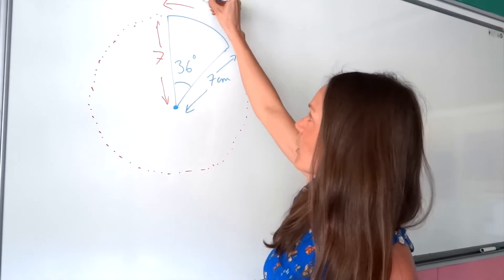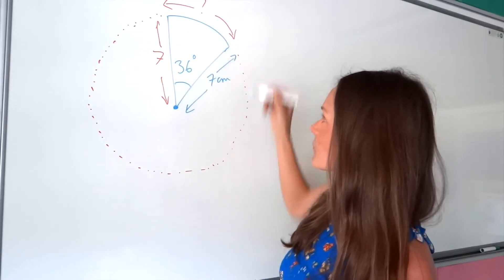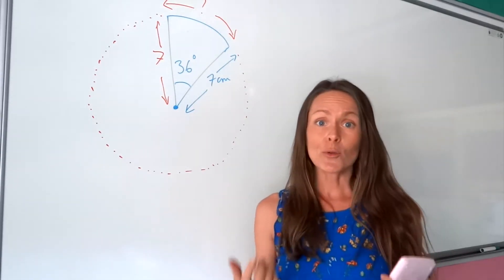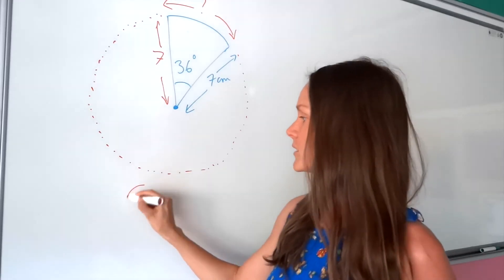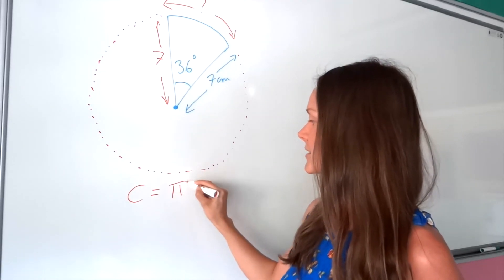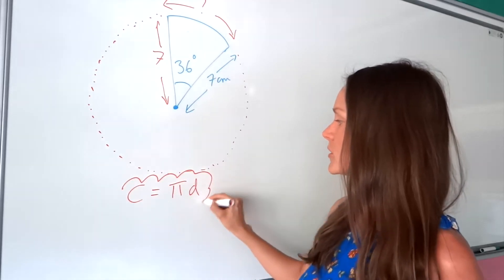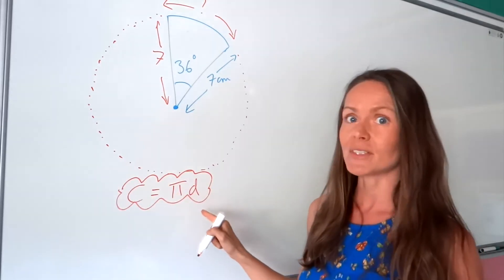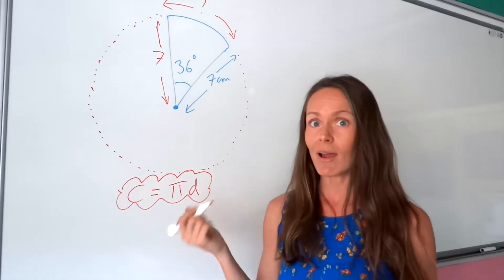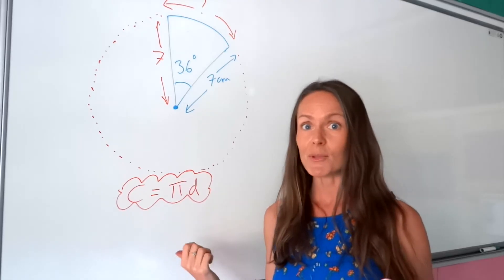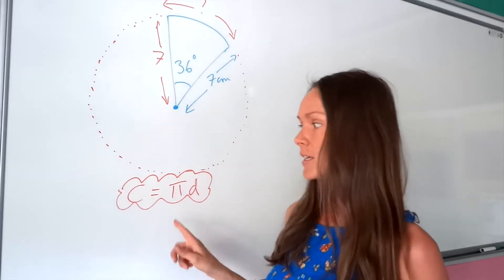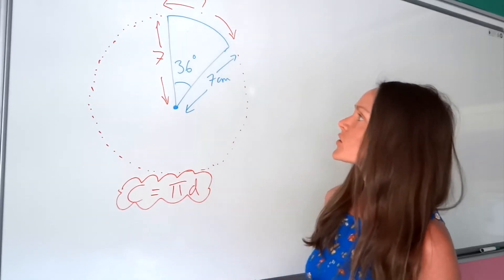It's this one here, the curved part, that's the tricky bit. So hopefully you already know how to work out the circumference of a circle and you know that the formula is C equals pi D. So circumference equals pi times diameter. If you don't, I do have another video with some examples of finding the circumference. So it might be a good idea to check that out first if you're not familiar with this.